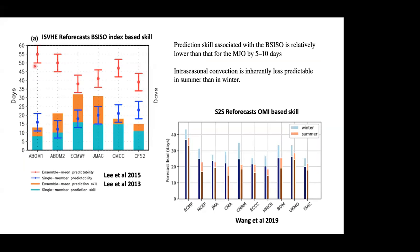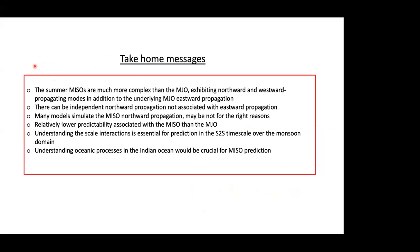The take-home messages are: MISO is more complex than the MJO — it exhibits northward and westward propagating modes in addition to the underlying MJO eastward propagation, and there can be independent northward propagation not associated with eastward propagation. Many models simulate MISO northward propagation but may not be for the right reasons. Relatively lower predictability is associated with MISO than the MJO. Understanding scale interactions is essential for predicting on S2S timescales over the monsoon domain. Understanding oceanic processes is another factor we really need to work upon.